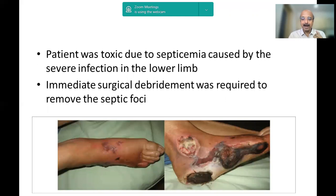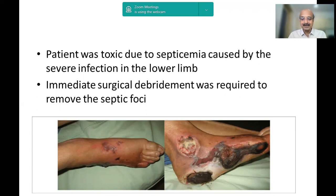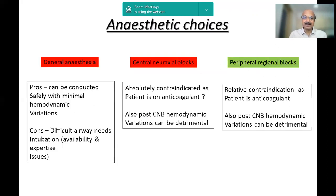In this particular case, apart from possible diabetic end-organ issues, you also have a replaced mitral valve with the patient on anticoagulation, so it is very important to find out if the patient has atrial fibrillation. This is an emergency — you should not wait to normalize all parameters; we need to debride as fast as possible. Fortunately, in our case the INR is only 1.5, so we are planning for an immediate surgical debridement.